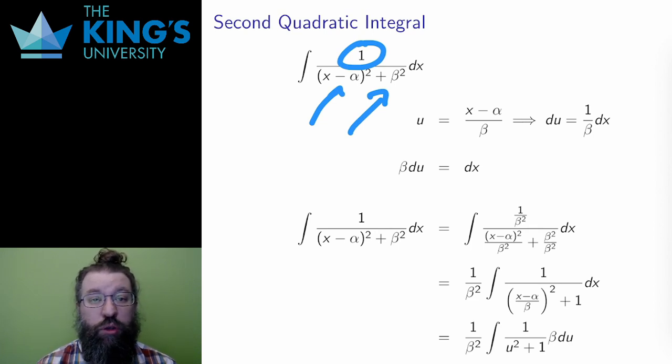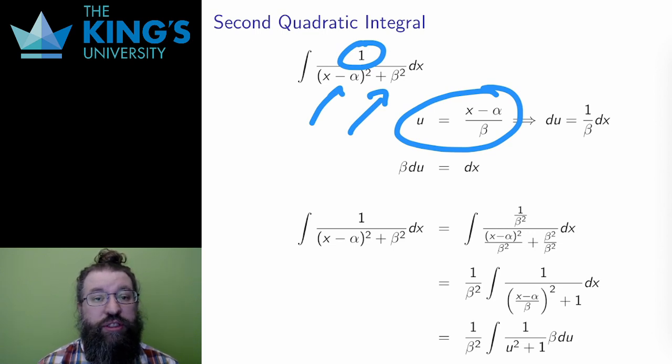In this case, a substitution will also work, but it's a fair bit more complicated than the previous substitution. The substitution that works here is u equals x minus alpha over beta. The derivative of this substitution is 1 over beta, so du is 1 over beta dx.